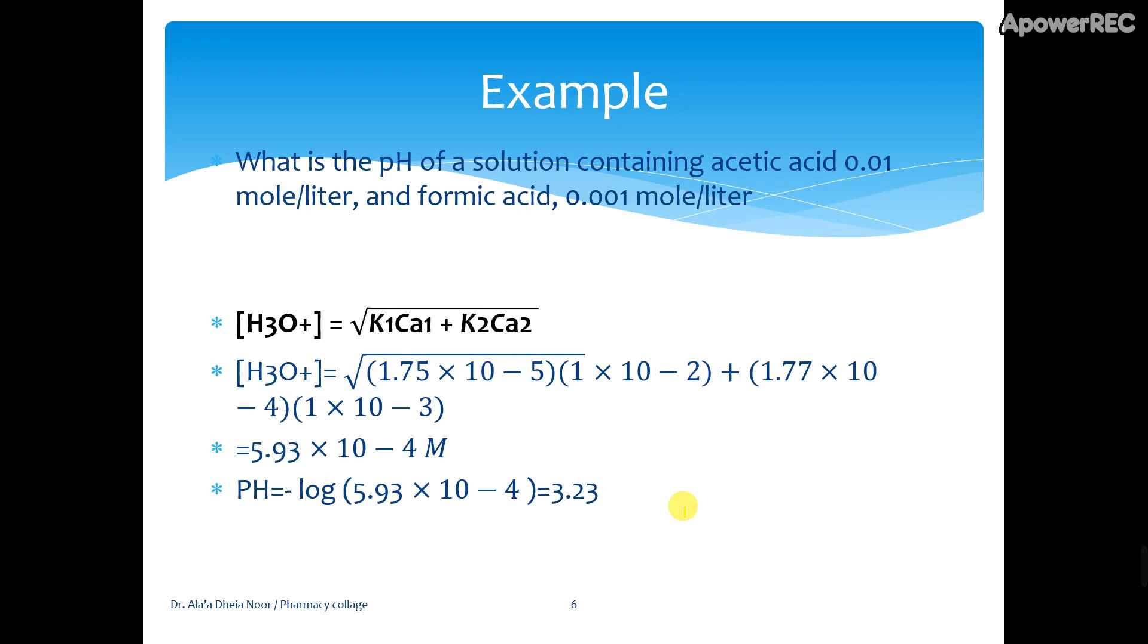Now what is the pH of a solution containing acetic acid, a weak acid, and formic acid, another weak acid? So this system contains two weak acids. We calculate the hydronium ion using Ka1 times Ca1 plus Ka2 times Ca2. Then substitute the Ka1 and Ka2 values given in the problem. The pH will be 3.23, which is acidic, below 7, which is correct.